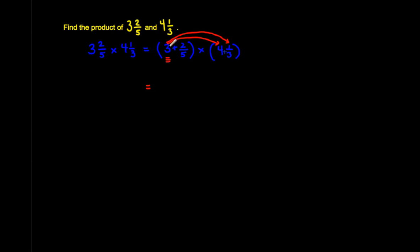Three times four is twelve. Then I'm going to add that together with three times one-third. Three times one-third is three-thirds, and three-thirds is one whole. So three times one-third equals one.